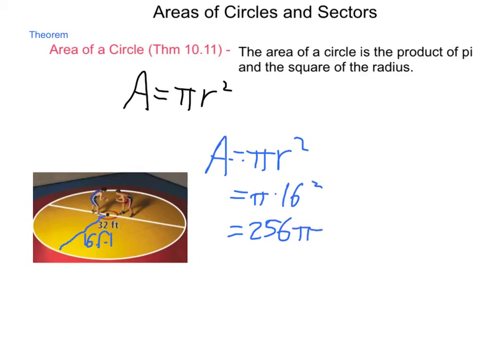So, we have 256 pi if we go off of exact measurements, or this would be approximately 804 and a quarter feet squared, or square feet. So, being able to calculate the area is simply a matter of squaring and then multiplying by pi. Leave it in terms or carry it through.